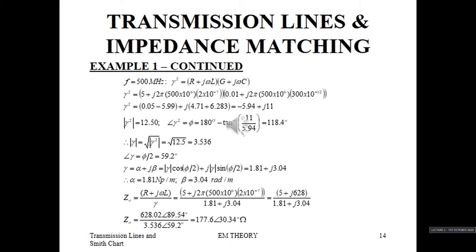Z₀ as before is R + jωL over gamma. Inserting omega for 500 MHz, we find Z₀ equals 177.6 ohms at an angle of 30.34 degrees.